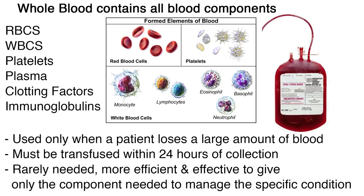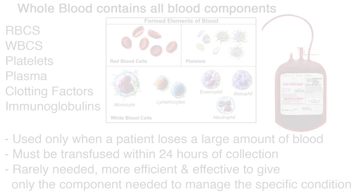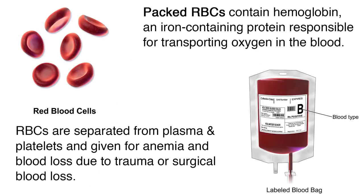Patients rarely need all the components of whole blood, so it is more efficient and effective to give only the component needed to manage the specific condition. Second, we'll talk about packed red blood cells. Packed red blood cells contain hemoglobin, an iron-containing protein responsible for transporting oxygen in the blood. RBCs are separated from plasma and platelets and given for anemia and blood loss due to trauma or surgical blood loss.